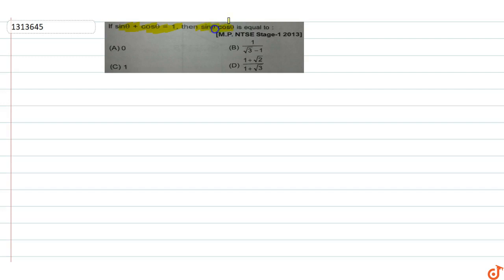In this question, if sin θ + cos θ = 1, then we need to find the value of sin θ · cos θ. We are given that sin θ + cos θ = 1.